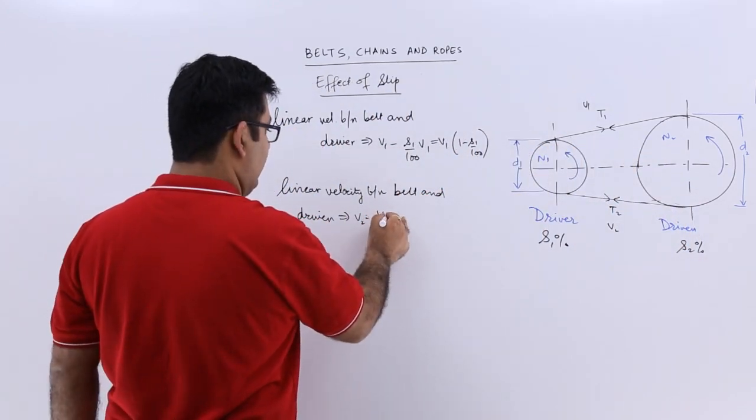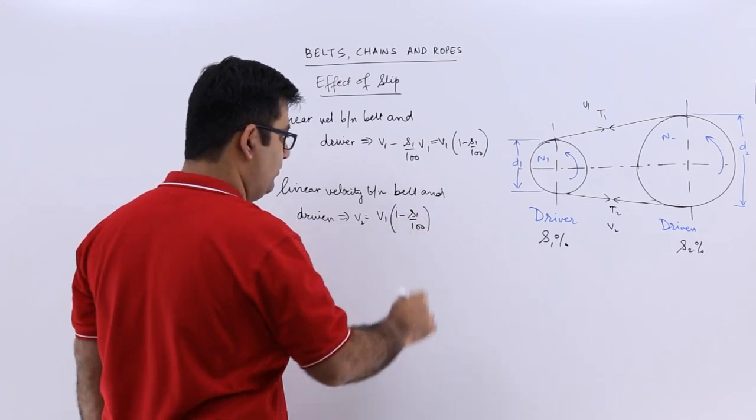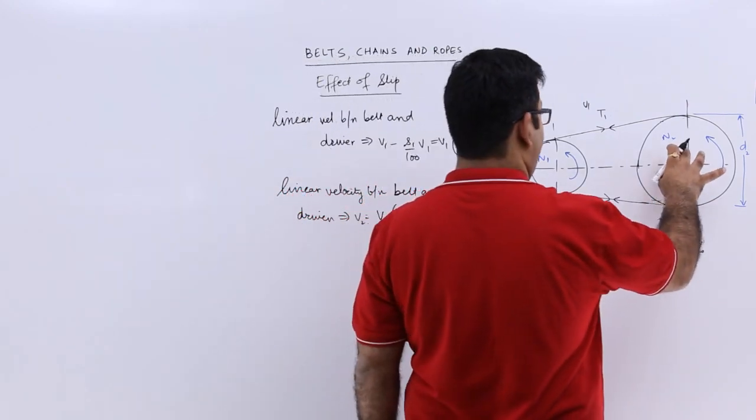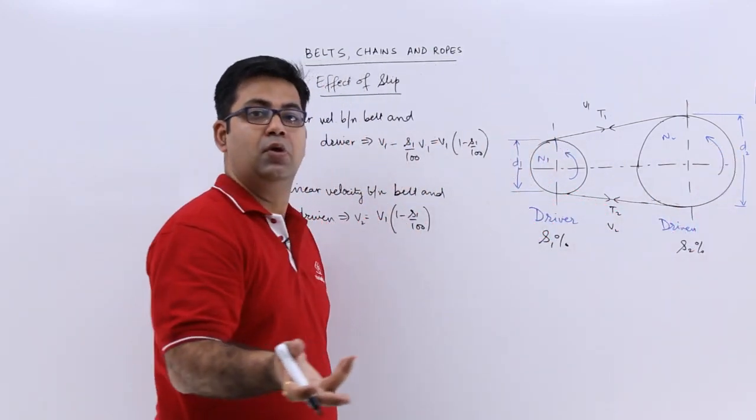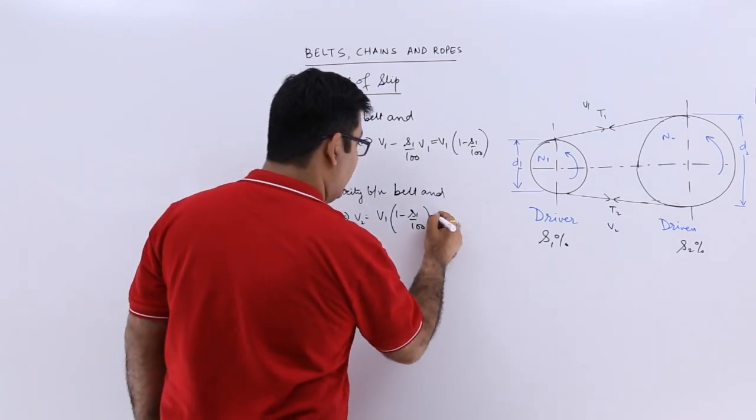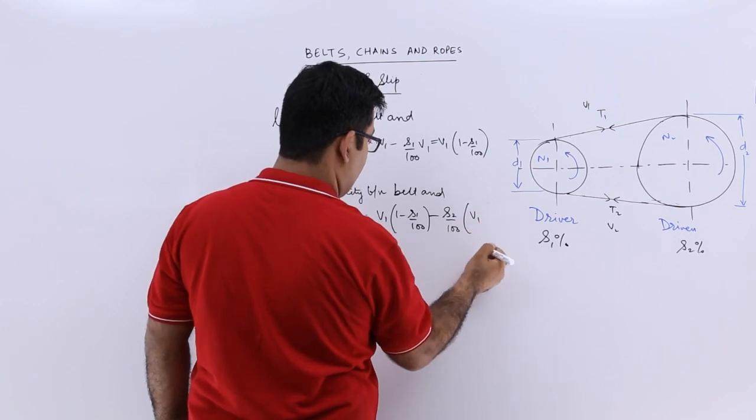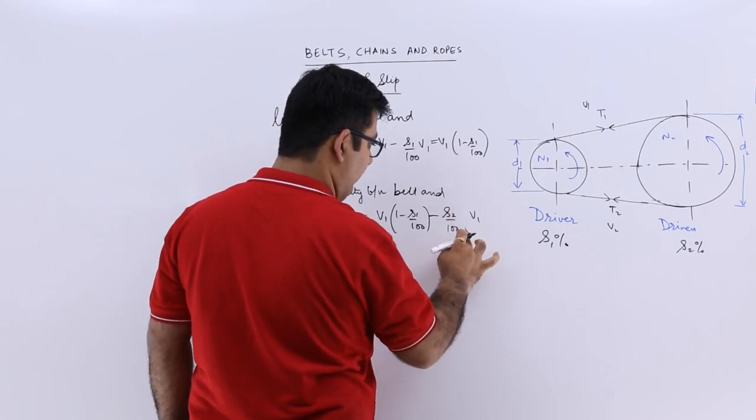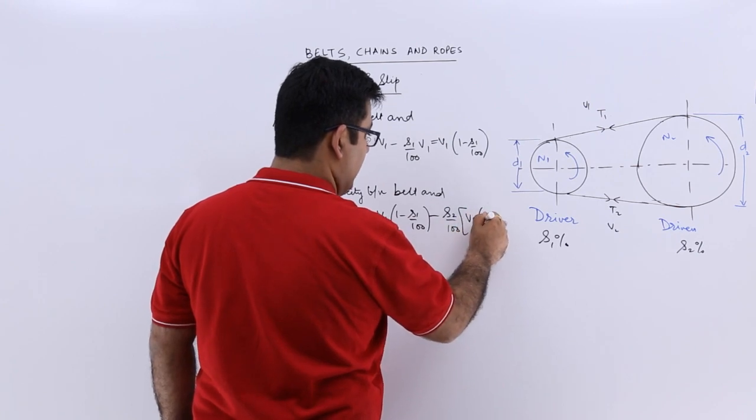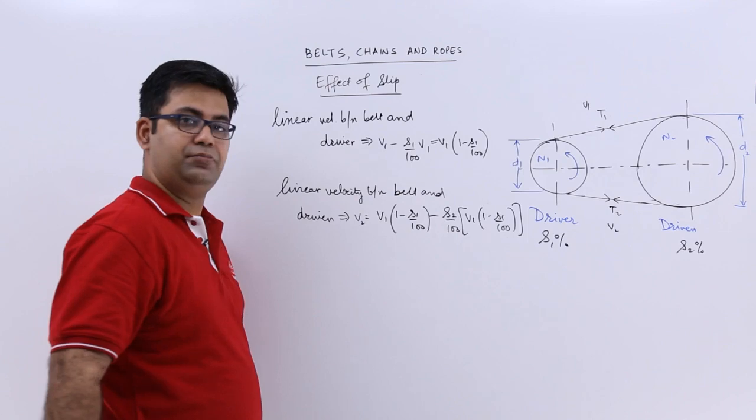So I would say this is equal to v1 times (1 minus s1/100). Now there is a certain amount of slip in between the driven pulley and the belt, so this will also reduce. There is a reduction of s2 percent of whatever velocity is coming in.